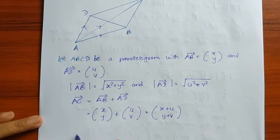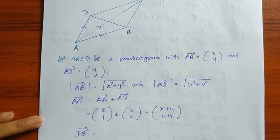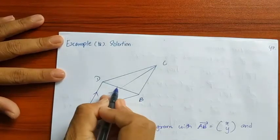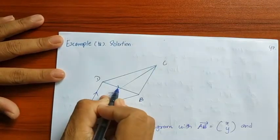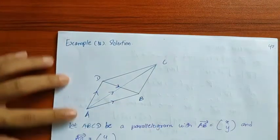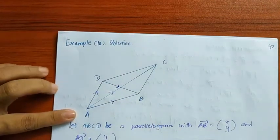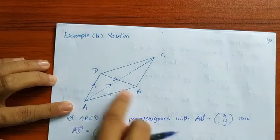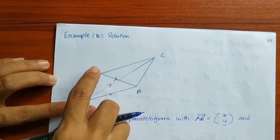Vector DB: DB equals vector AB minus vector AD.